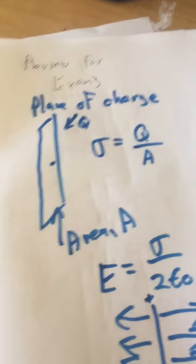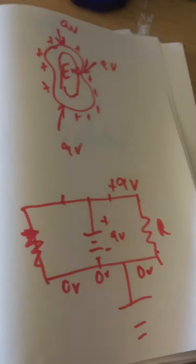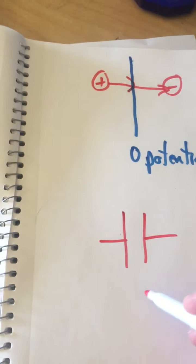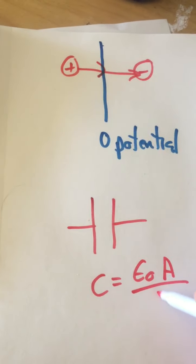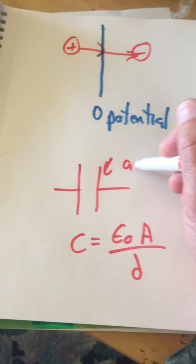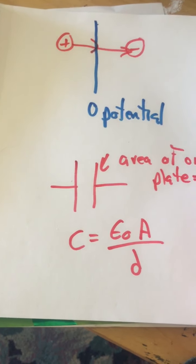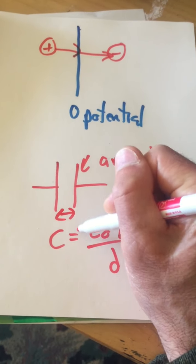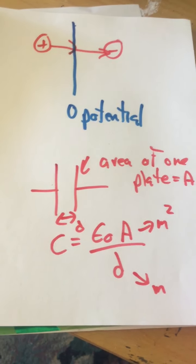Capacitors and dielectrics. If you have a capacitor with two parallel plates separated by vacuum or air, the capacitance is epsilon zero times A divided by D, where A is the area of one plate and D is the separation between the plates. Both must be in the correct units — meters squared for area and meters for separation — to correctly calculate the capacitance.